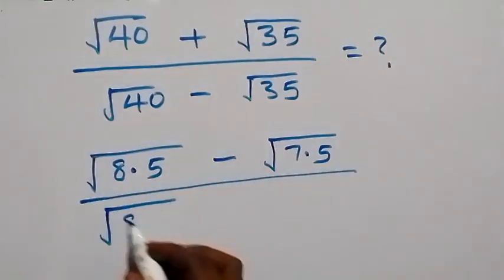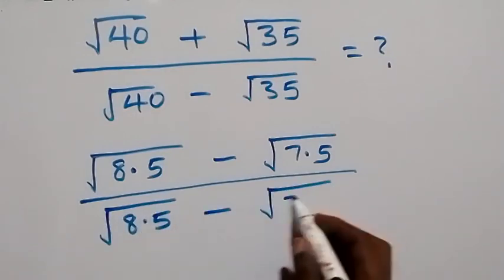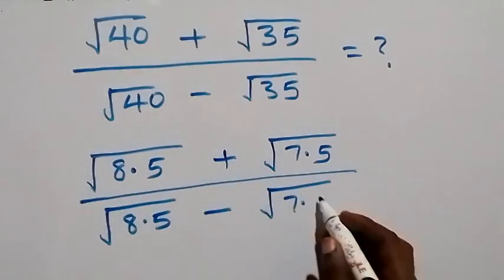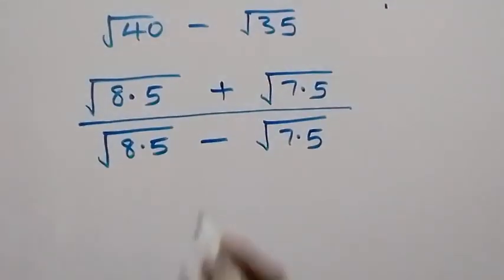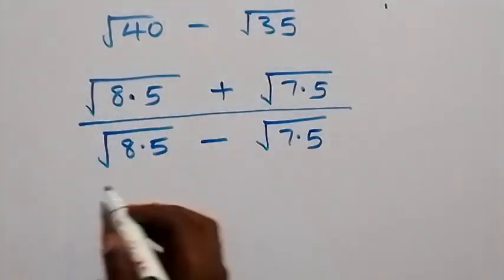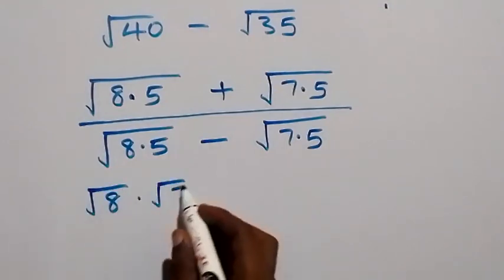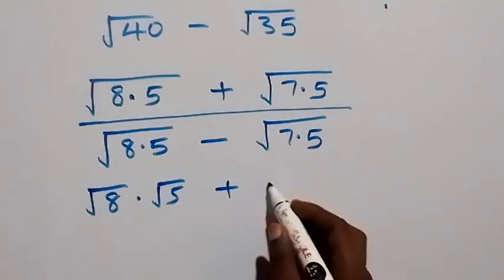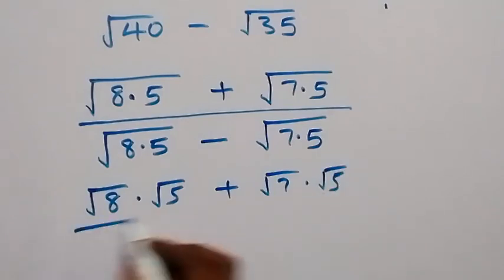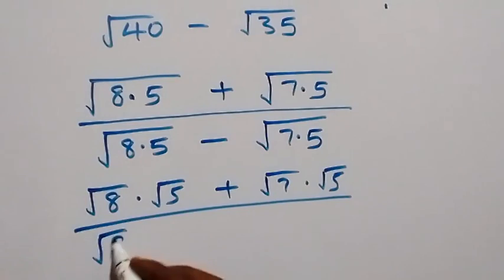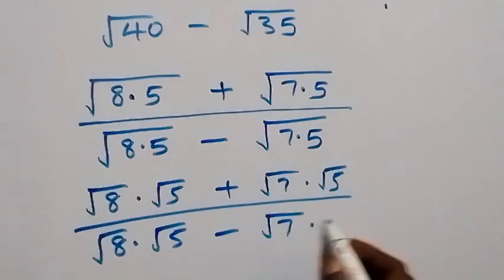So we have root 8 times 5, then plus root 7 times 5 in the numerator, then divided by root 8 times 5, then minus root 7 times 5. From here we can separate these since we multiply into two roots, and that will be root 8 times root 5, then plus root 7 times root 5, divided by root 8 times root 5 minus root 7 times root 5.